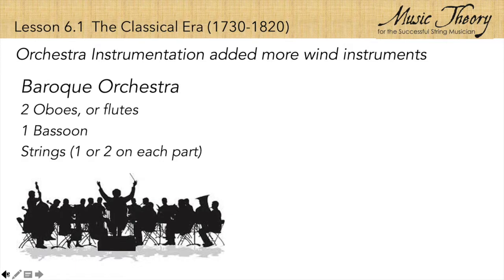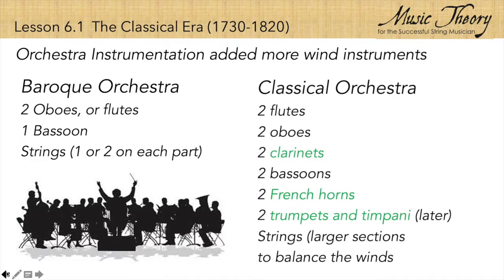The older Baroque orchestra had two oboes or flutes, a bassoon, and small sections of strings with one to two people on each part. The newer classical orchestra had two flutes, two oboes, two bassoons, and new instruments like clarinets, French horns, trumpets, and timpani, and it had larger sections of strings to balance the winds.